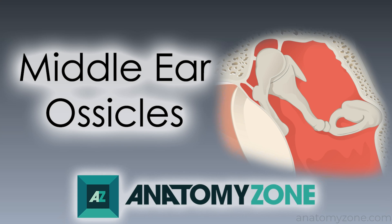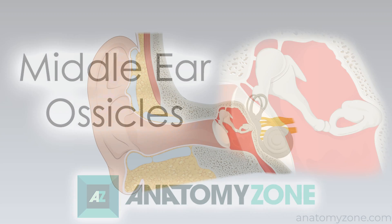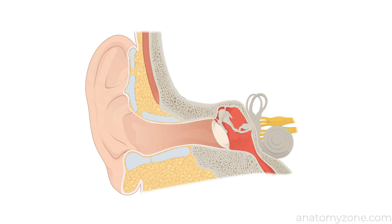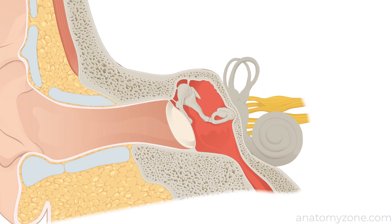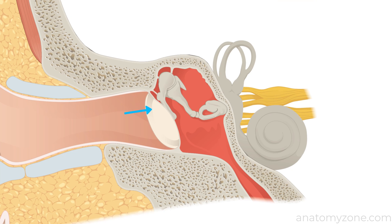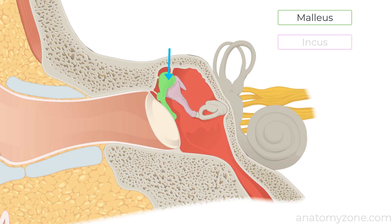Hi, this is Peter from AnatomyZone and in this tutorial we're going to take a look at the anatomy of the ossicles of the middle ear. There are three ossicles which bridge the middle ear cleft, attaching laterally to the tympanic membrane and medially to the oval window of the inner ear: the malleus, the incus and the stapes.